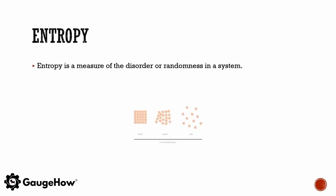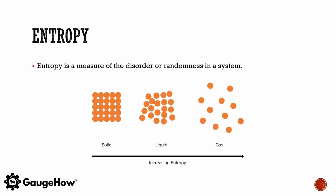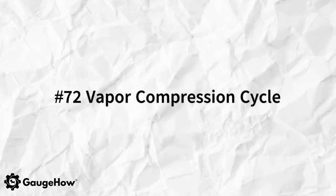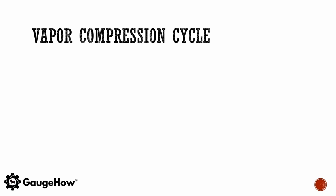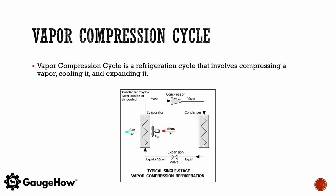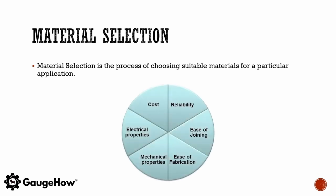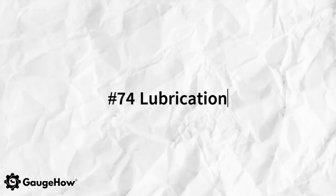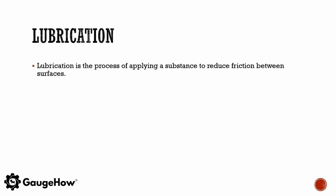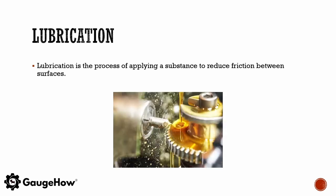Entropy is a measure of the disorder or randomness in a system. The vapour compression cycle is a refrigeration cycle that involves compressing a vapour, cooling it and expanding it. Material selection is the process of choosing suitable materials for a particular application. Lubrication is the process of applying a substance to reduce friction between surfaces.